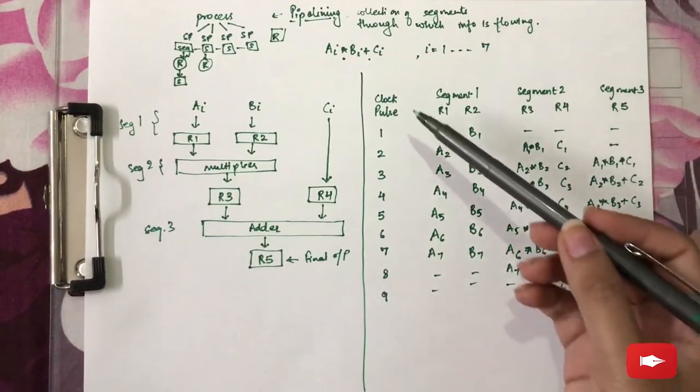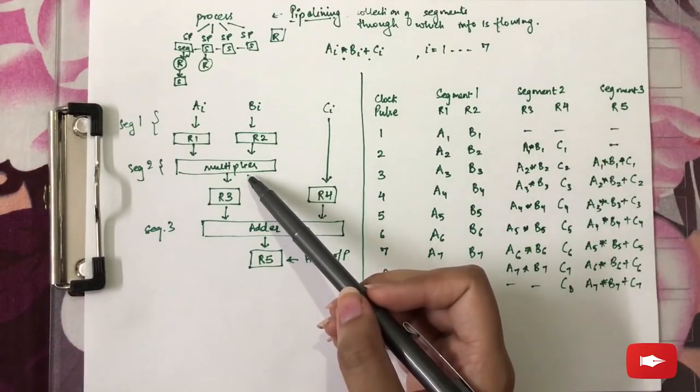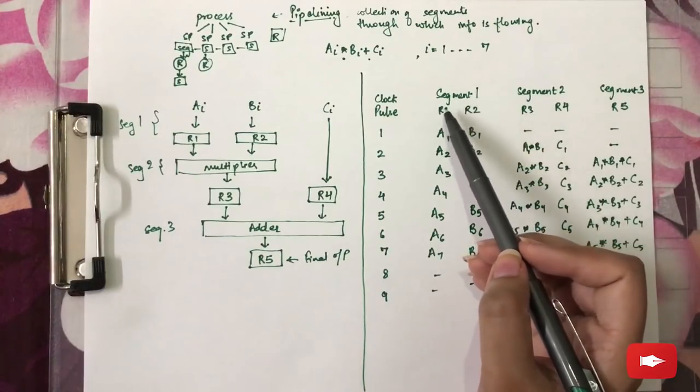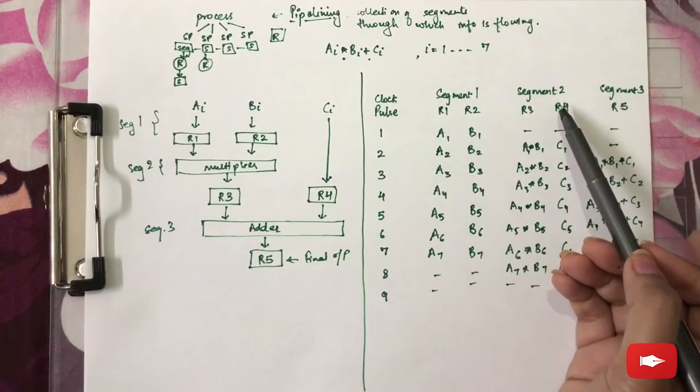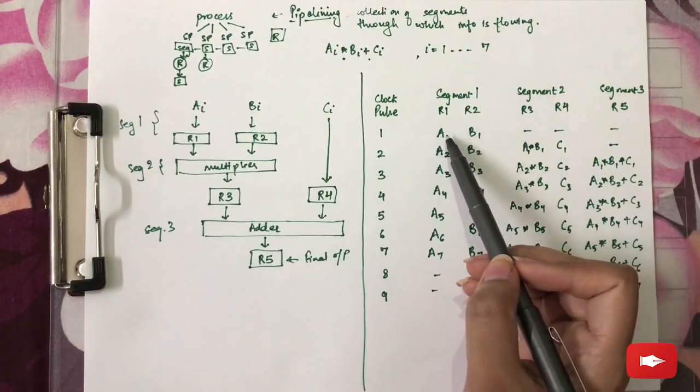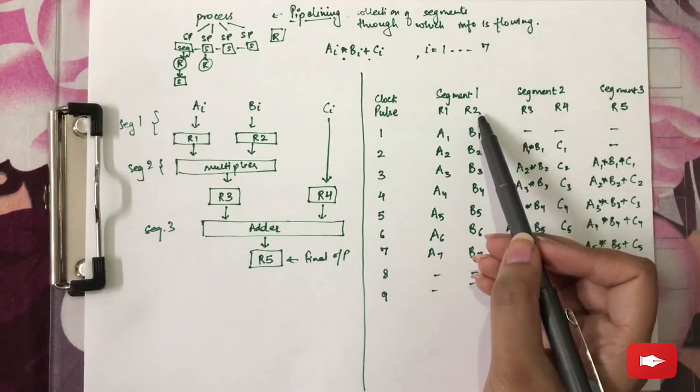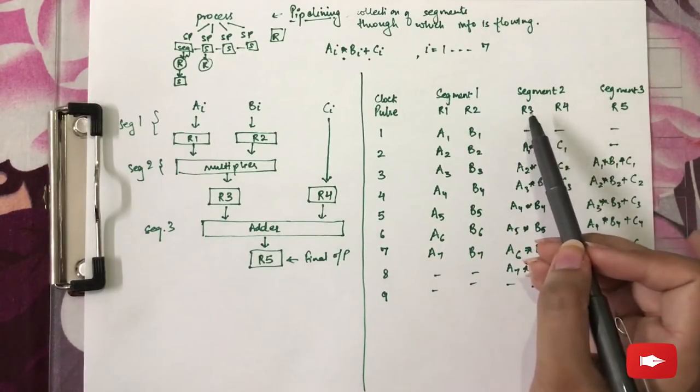This is the table representing the clock pulse, the segments according to this example and the registers involved in that particular segment. Now, during clock pulse 1, only the two operands A1 and B1 were loaded into the respective registers and other segments were empty.